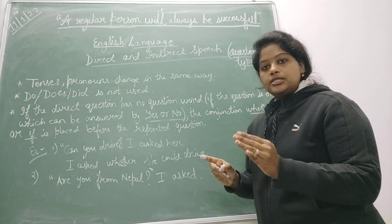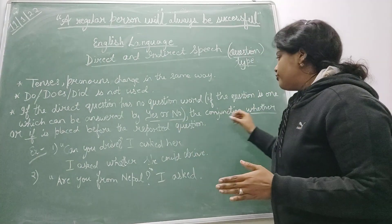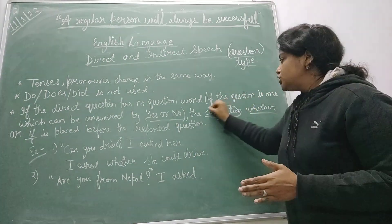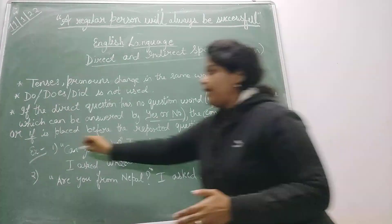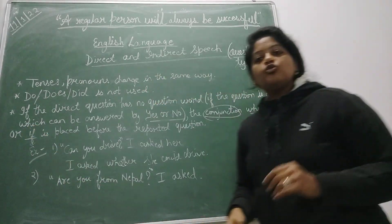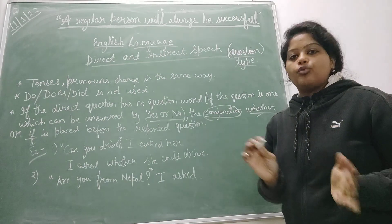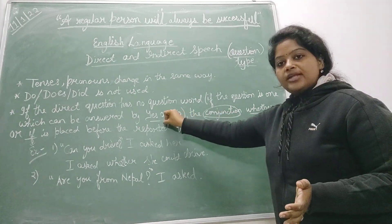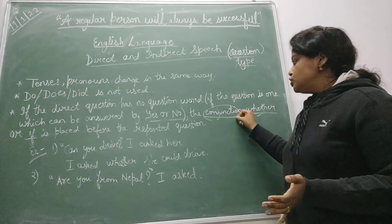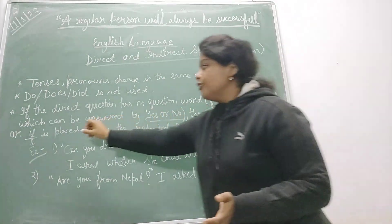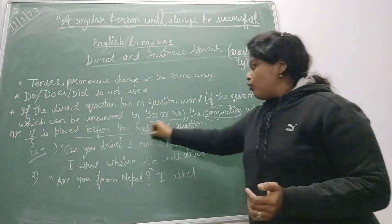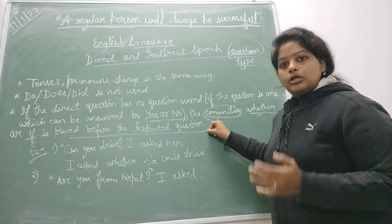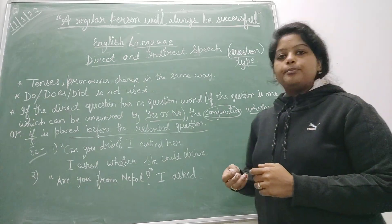If it can be answered by yes or no, then what we have to do is we have to use the conjunction whether or if. These are the two conjunctions which we are going to use. We can use either of them. So if that question can be answered in yes or no, then we are going to use the conjunction whether or if. That is to be placed before the reported question. So let's see one example to understand it better.